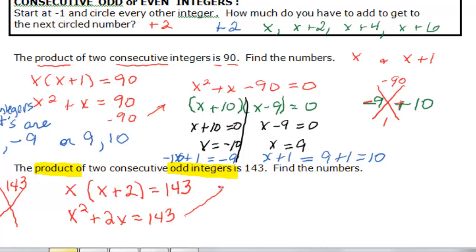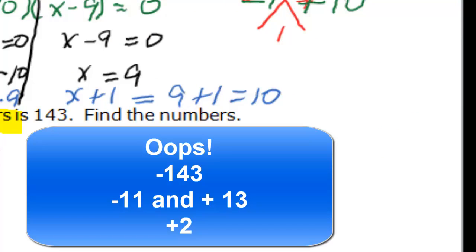And if I subtract that 143 from both sides I have x squared plus 2x minus 143 equal to 0.